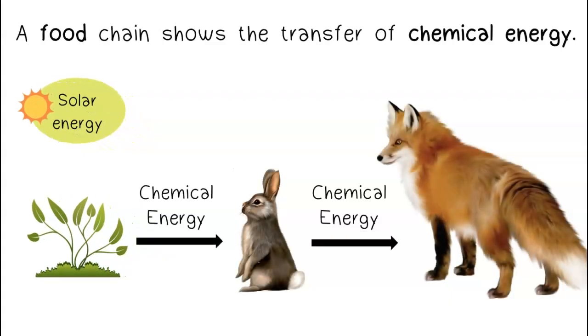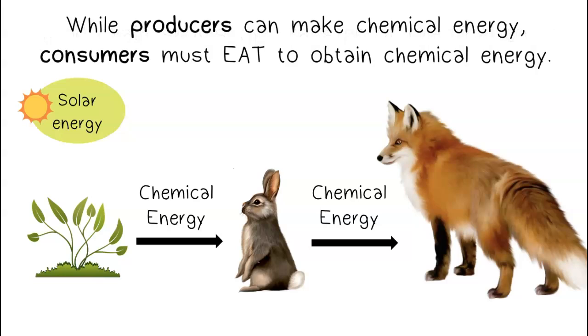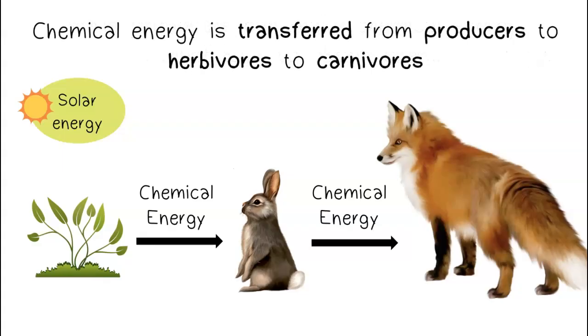A food chain shows the transfer of chemical energy. While producers can make chemical energy, consumers must eat to obtain chemical energy. Chemical energy is transferred from producers to herbivores to carnivores.